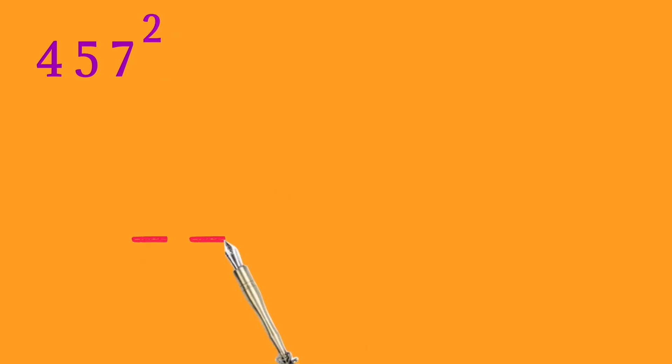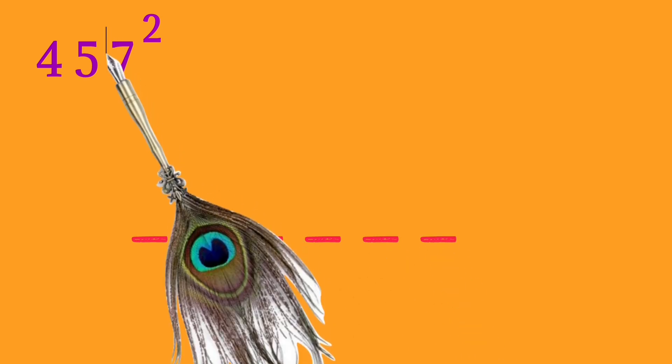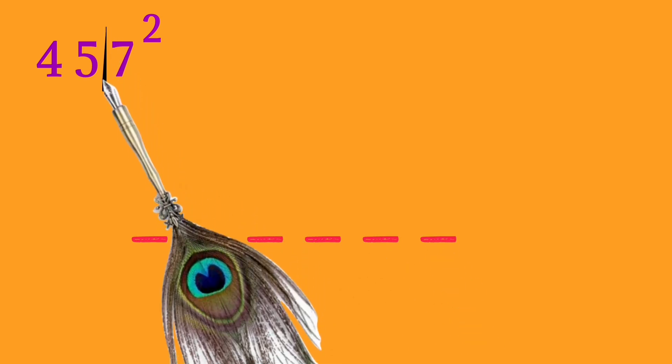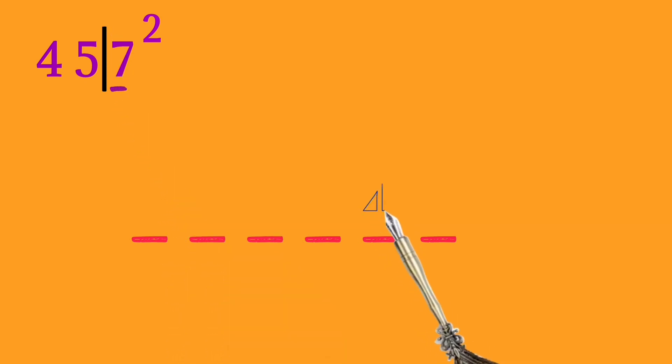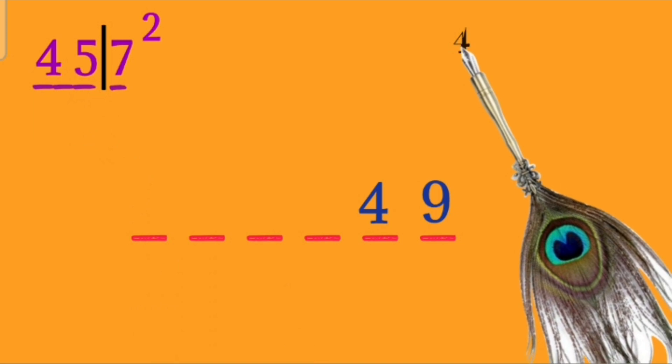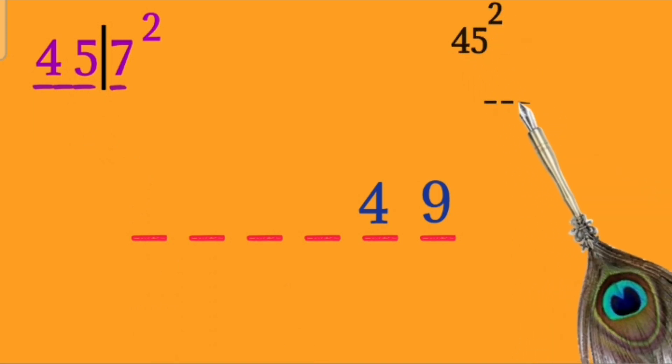Then square the last digit. We know that the square of 7 is 49. Fill it in the fifth and sixth blanks. Further, square the number 45 based on the previous method. It becomes 2025. Fill it in the first four blanks.